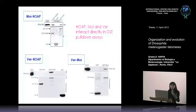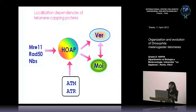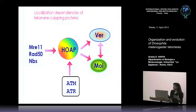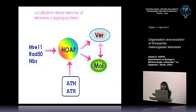Also, if you express these proteins in a heterologous system like mammalian cells, it is possible to isolate this complex. Direct interactions between these proteins were demonstrated with proteins purified from bacteria. We studied the distribution of these proteins in different mutant backgrounds to derive a model for how they are recruited at telomeres. We now know that HipHop recognizes the telomere depending on the MRN complex and through two pathways involving the ATM and ATR kinases. HipHop is the first protein to recognize the telomere, then it recruits VER and MOI, which are mutually dependent for their localization at telomeres.